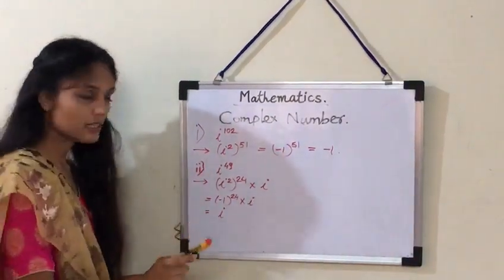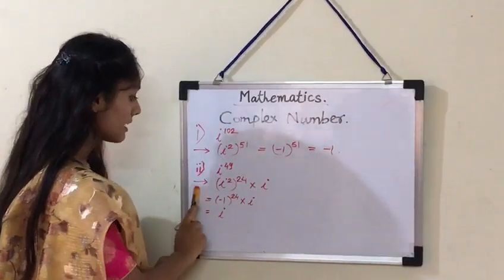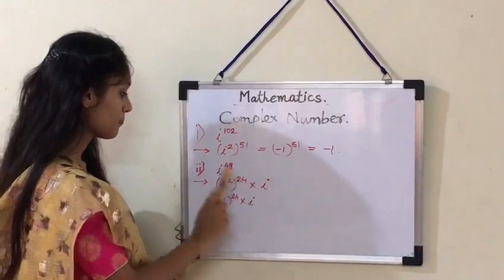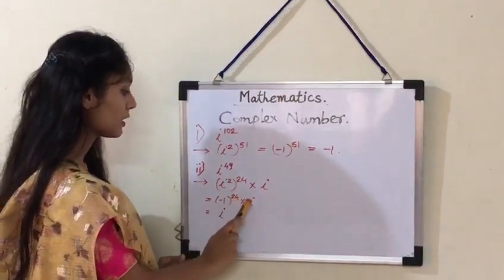Second example is i raised to 49. The answer is i square raised to 24 into i, minus 1 raised to 24 into i.